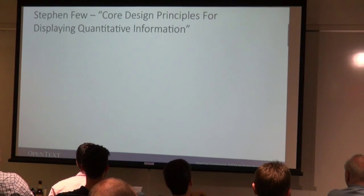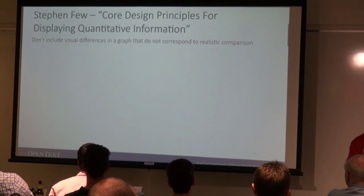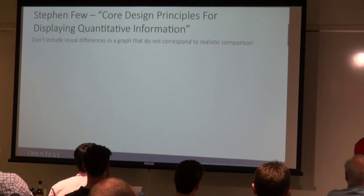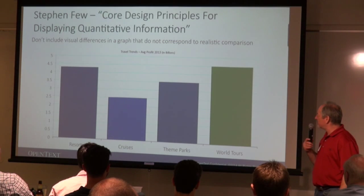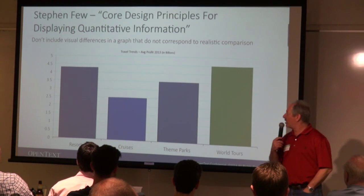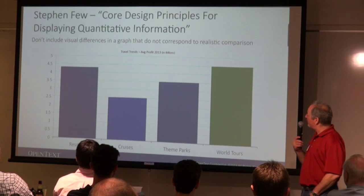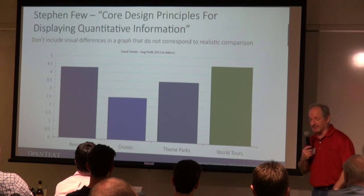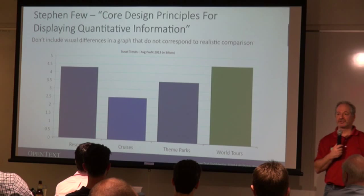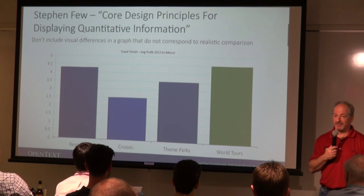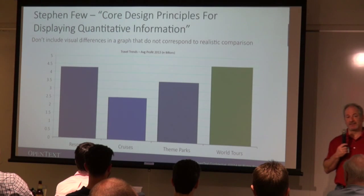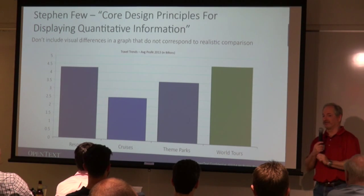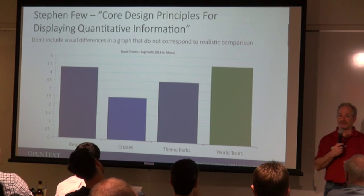His next principle: don't include visual differences in a graph that do not correspond to realistic comparisons. You can see slightly different colors on the different bars here, but what are we charting? Travel trends — average profit 2013 in billions of dollars. What we're charting is exactly the same thing; they should be the same color. There's no difference between world tours and theme parks.